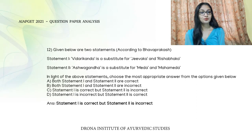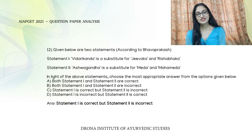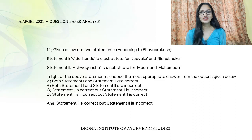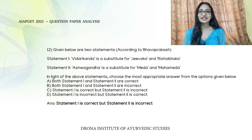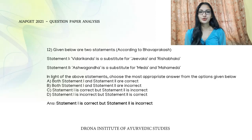The next question has two statements according to Bhav Prakasha. Statement one: Vidhari Kanda is the substitute for Jeevaka and Rishabhaka — this is true. Statement two states Ashwagandha is the substitute for Medha and Mahamedha, but the textbook says the substitute is Shatavari. So statement one is correct and statement two is incorrect.